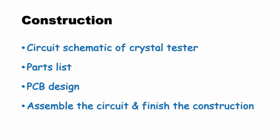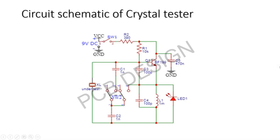On the construction side, the circuit schematic of the crystal tester is given. The parts list is also given to procure the required parts and start assembling. The ready-made PCB design is given here. You can assemble the circuit and finish the construction as easily as possible. It is a very simple circuit and as described earlier, just uses one transistor and very few components.